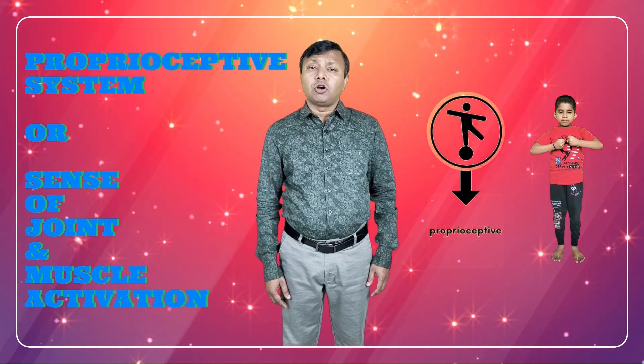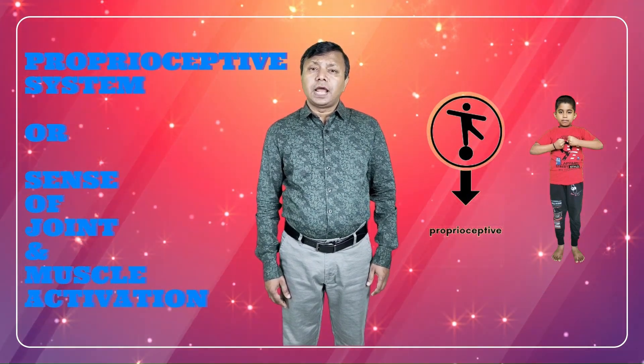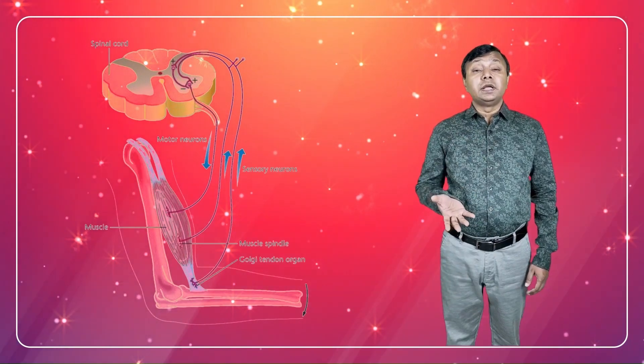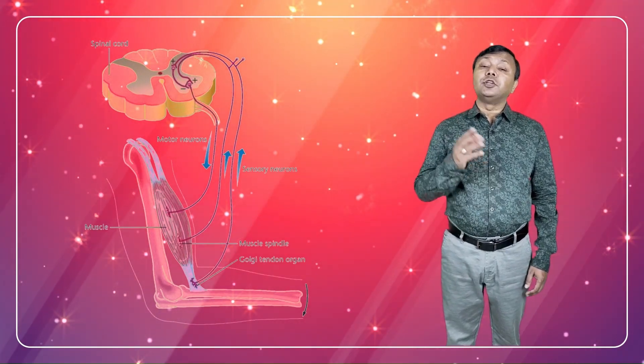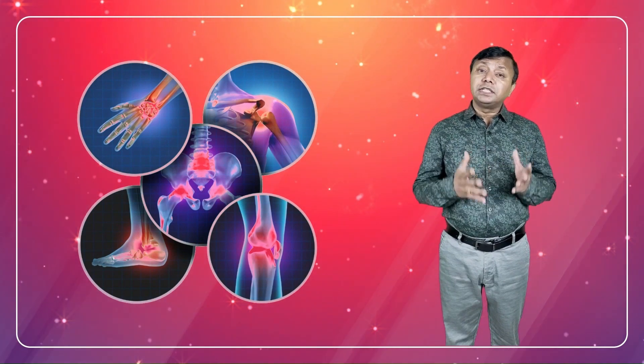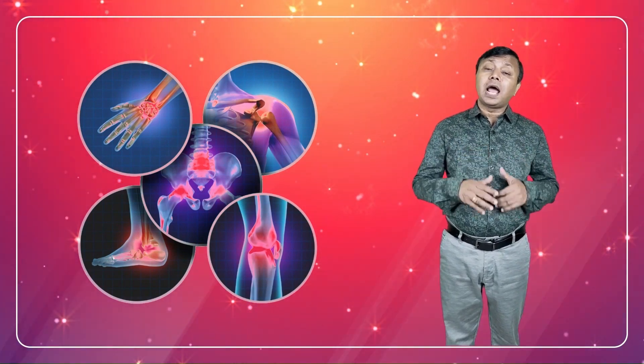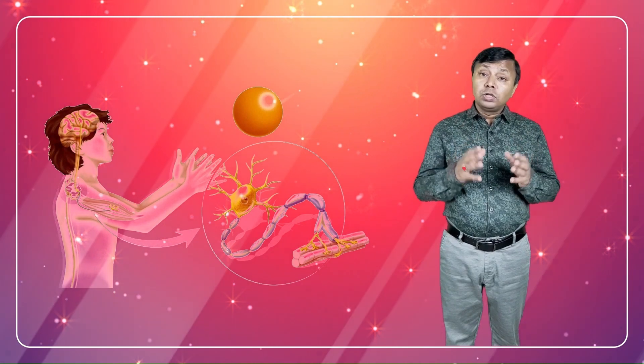Proprioceptive system, or sense of joints and muscle activation. Located within each of our muscles and joints, our proprioceptive system provides information about where our body is in space and controls force and pressure. It helps us to feel grounded and know where we are and what we are doing. It gives information about the weight and resistance of objects, muscle relaxation, muscle contraction, stretch and other movements of our body.